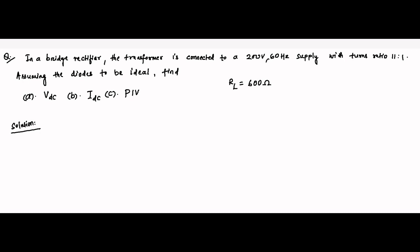Here is another question on full wave rectifier circuits. In a bridge rectifier, the transformer is connected to a 200 volt 60 Hz AC supply with a turns ratio of 11 is to 1. Assuming the diodes to be ideal — that is, zero forward resistance and zero forward voltage — find the DC value of voltage (VDC), DC current (IDC), and the peak inverse voltage (PIV). The load resistance value is 600 ohms.